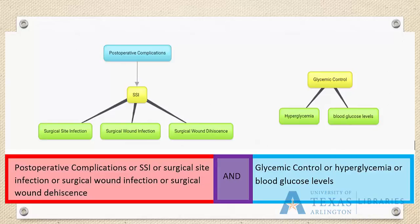I like to set up my search like this before I put everything in the search boxes. I know what I've already searched, so I don't waste my time doing the same search later. Plus, I can take the search into another database, like the medical database PubMed, and get even more articles. Also, by setting up a search like this, I can save time by not looking at duplicate articles.